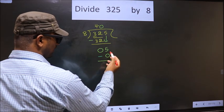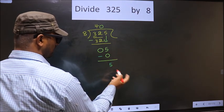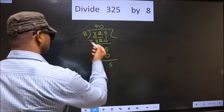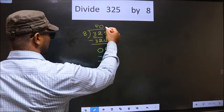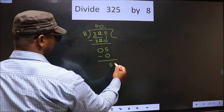Over here we did not bring any number down, and 5 is smaller than 8. So now you can put a dot and take 0 here.